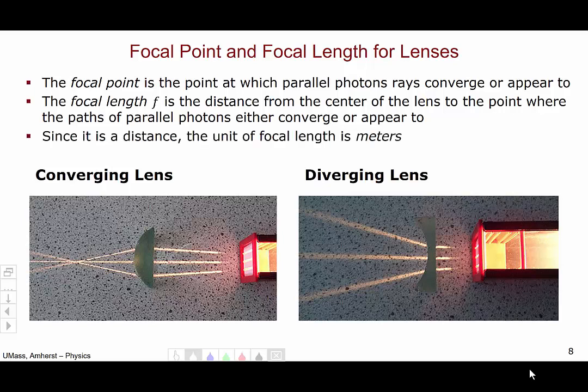Since the focal length is a distance, the unit of focal length is meters. So, for the converging lens, this point where the light rays, where the photons, appear to intersect, is the focal point.